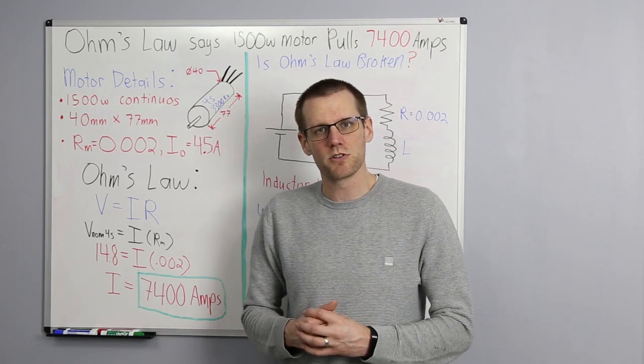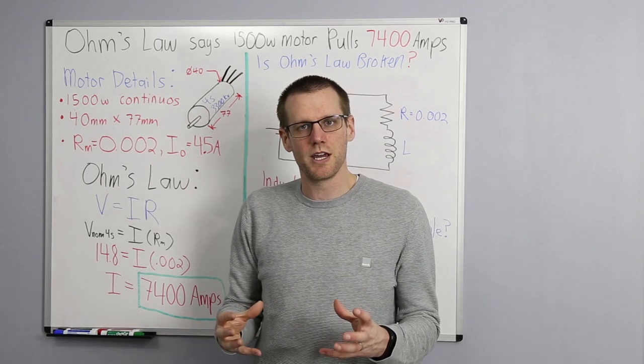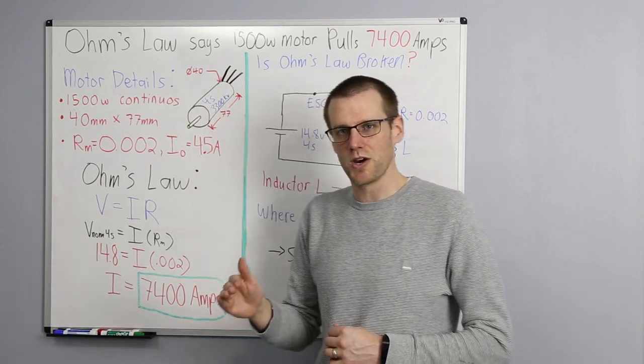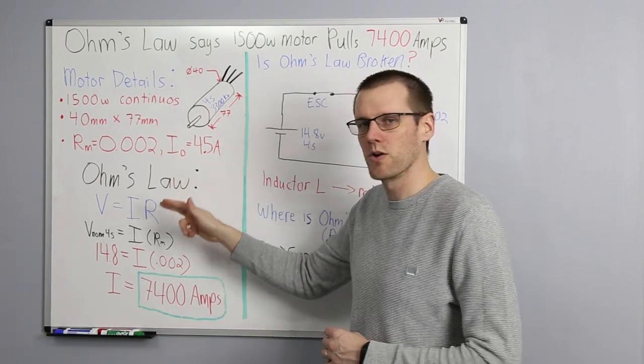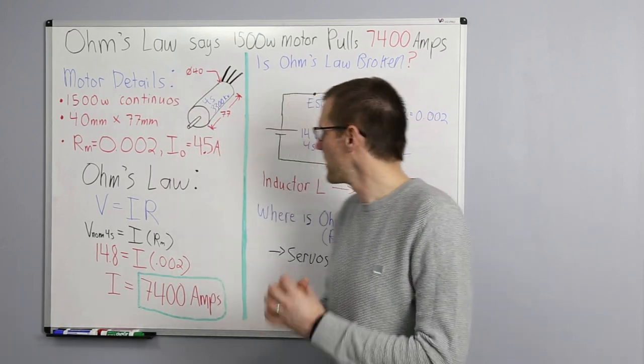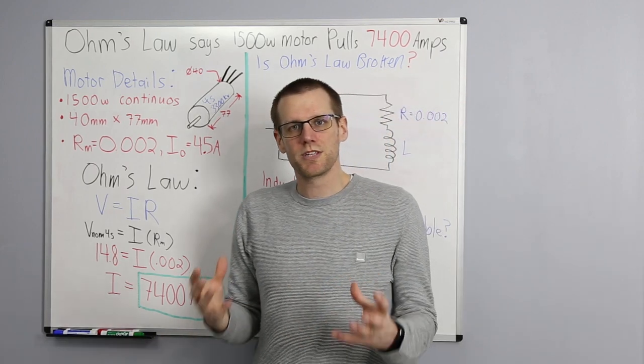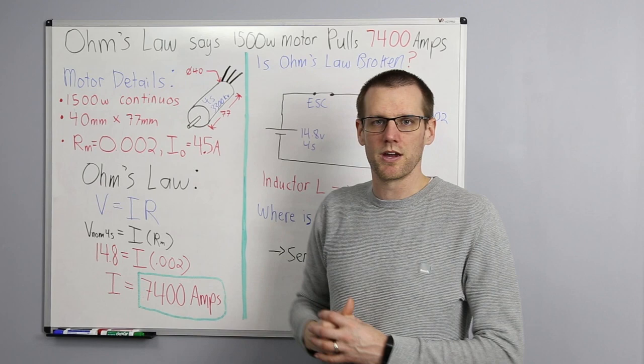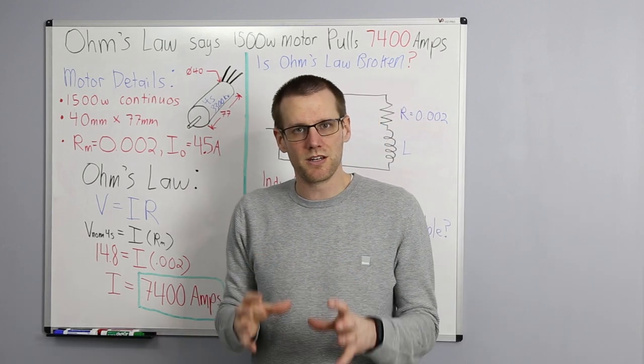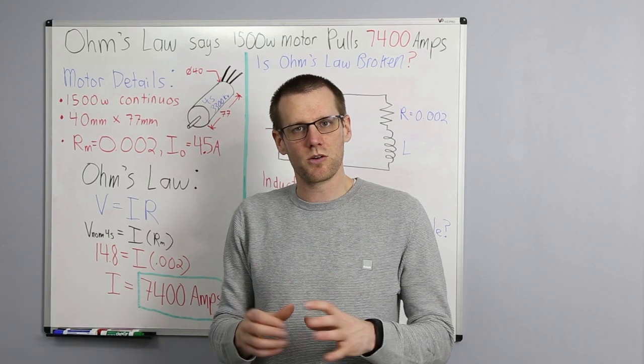Now the way that we're going to go about this is we're going to first look at a specific example, we're going to run through all of the motor details, and then we're going to look at exactly what Ohm's Law represents and how it works for our specific example. And lastly, we're going to answer the question, is Ohm's Law broken? As you can tell from the title of this video and the title across the whiteboard there, this motor pulls a significant amount of current. And we're going to understand exactly what this means and why.